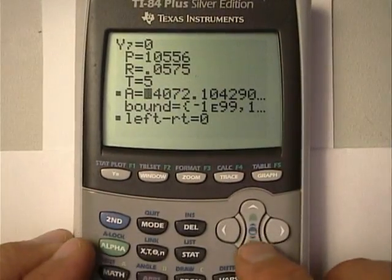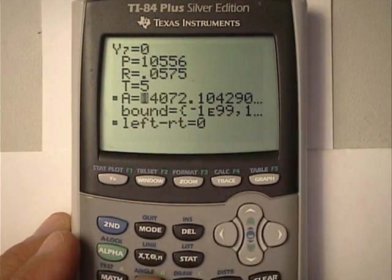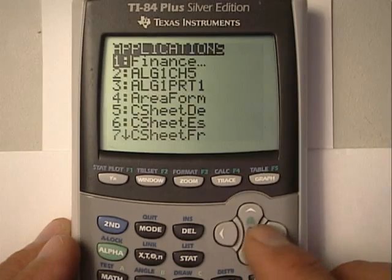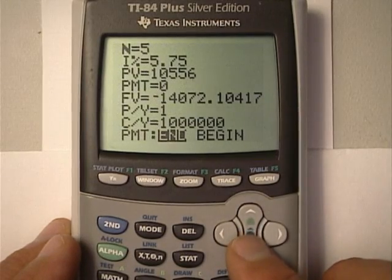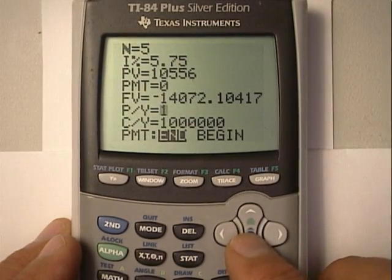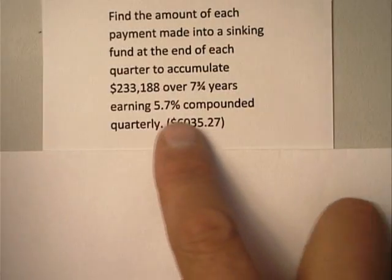So this is going to be interesting. First time we've actually used TVM Solver to find a payment. So let's see. What do we need to set?